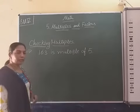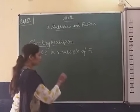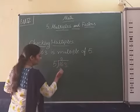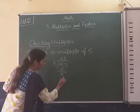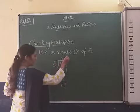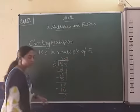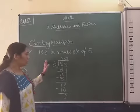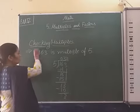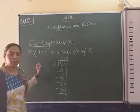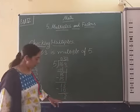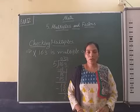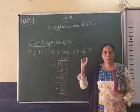Now let's check whether 163 is a multiple of 5. We divide 163 by 5. The remainder is 3. The rule is that the remainder should be 0. Since the remainder is 3, we cannot say that 163 is a multiple of 5, because the remainder has to be 0 for a number to be a multiple of another number.